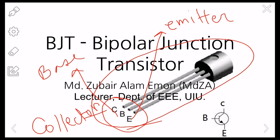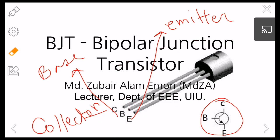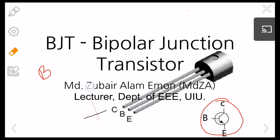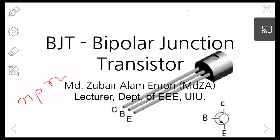The generic symbol for BJT looks something like this. BJT are of two kinds basically: one is NPN type and the other is PNP. These are the two types of BJT.